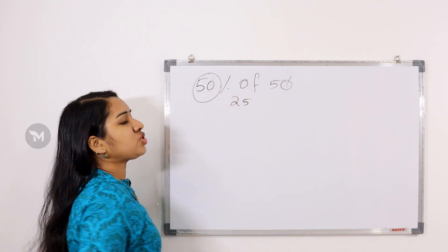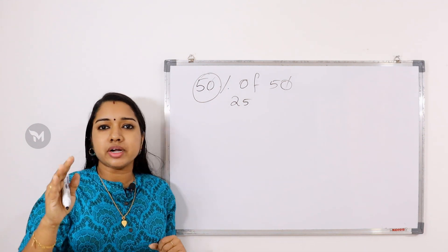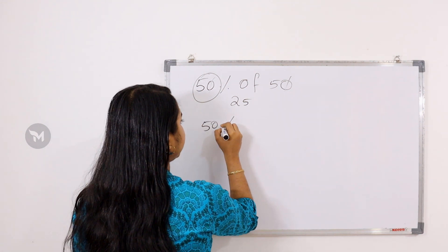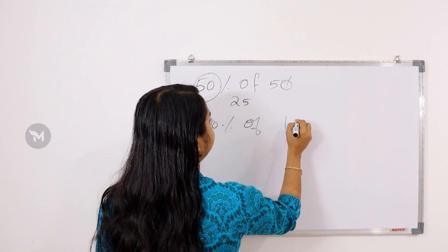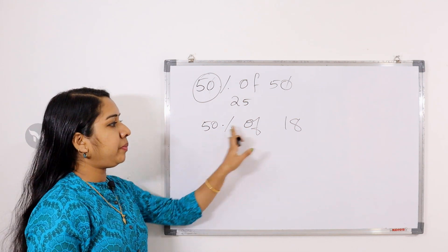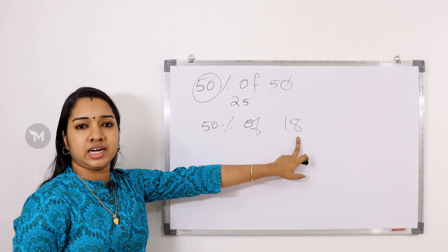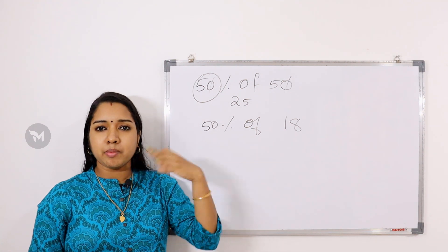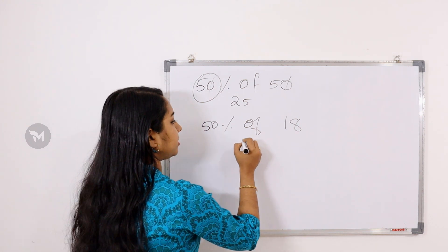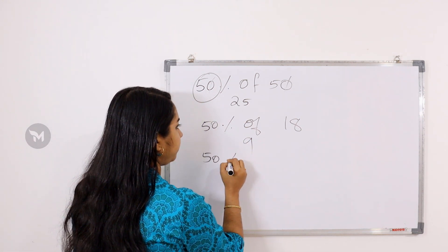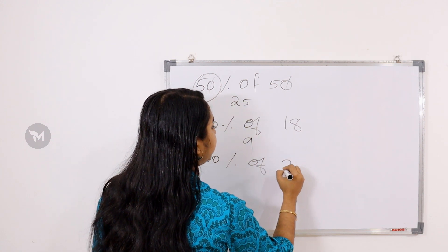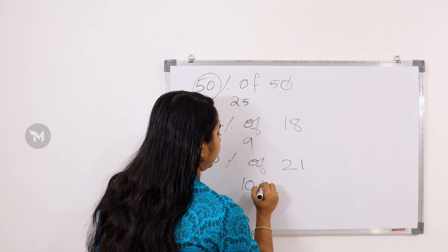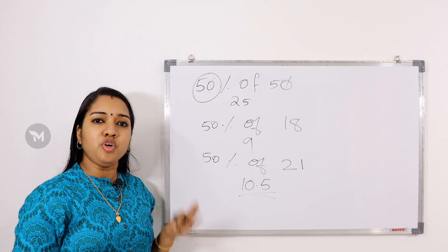Now, if you have 50%, that means you take half. 100% is the total value; 50% is half of that total value. So 50% of 18 — how much is it? It is 9. And 50% of 21 is equal to 10.5. If you have 50%, just do it in half.